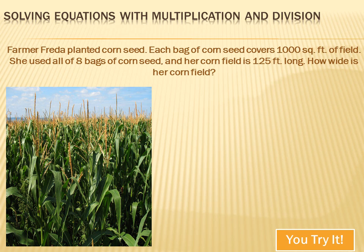Now, this is a little bit tricky. Let's see you read it again so you focus in on the important stuff. Farmer Frida planted corn seed. Each bag of corn seed covers 1,000 square feet. She used all of eight bags of corn seed, and her corn field is 125 feet long. How wide is her corn field? Well, we know that each bag of corn seed covered 1,000 square feet. That's square feet. That's a measurement of area, isn't it?